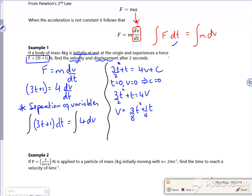So now I want my displacement. So we know that our displacement is an integral of the velocity dt. So my displacement will be the integral of 3 over 8t squared plus a quarter t dt.